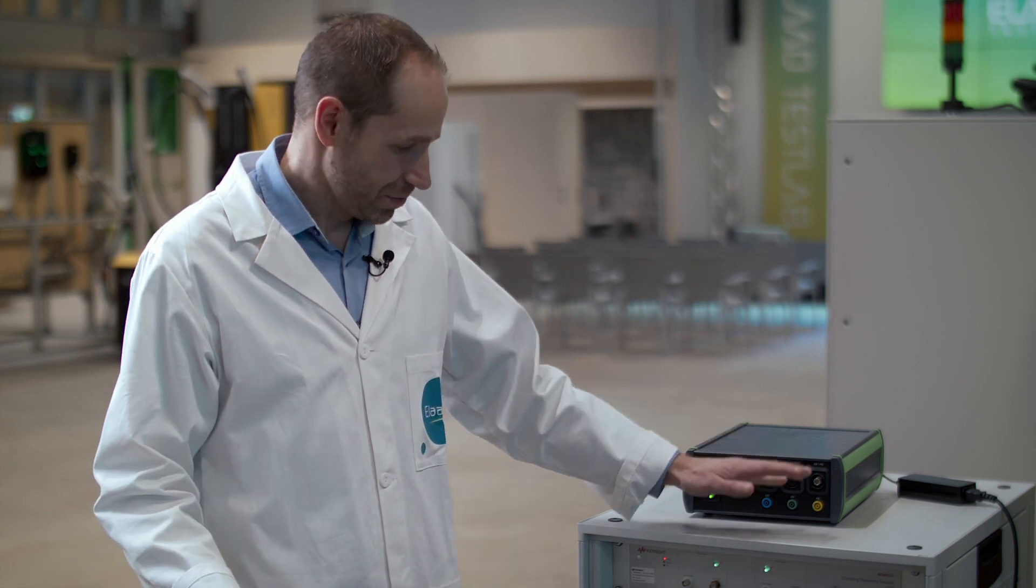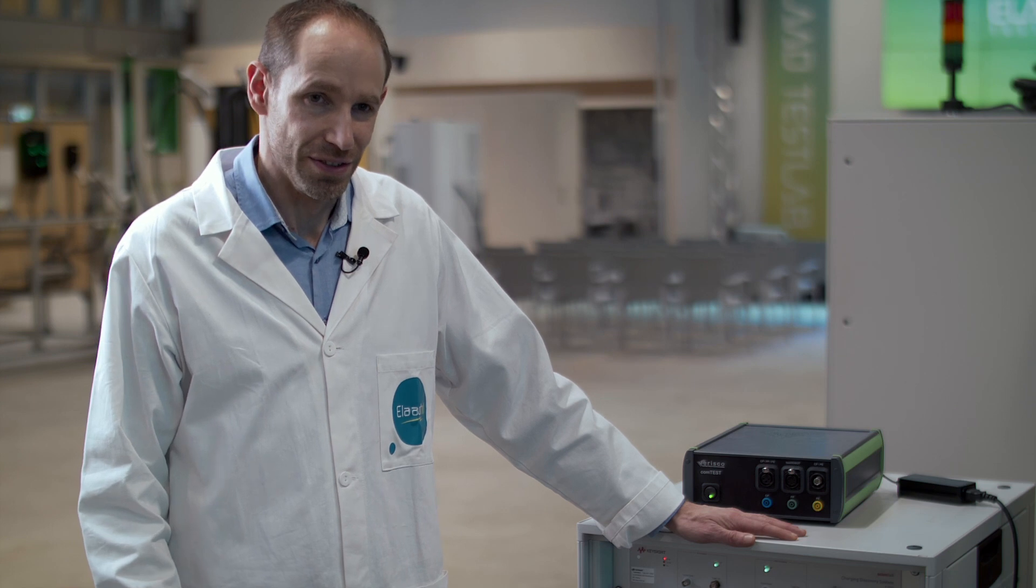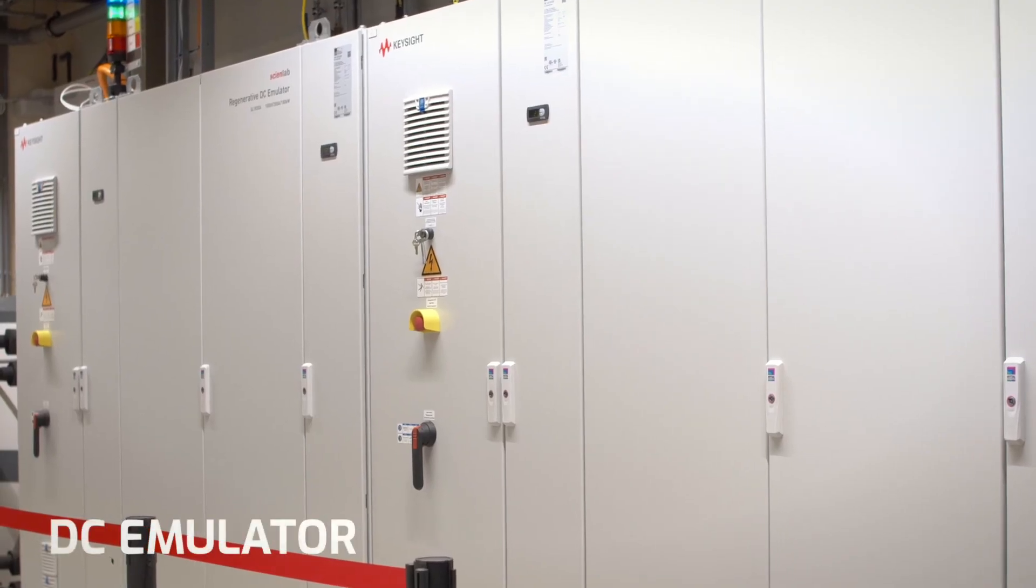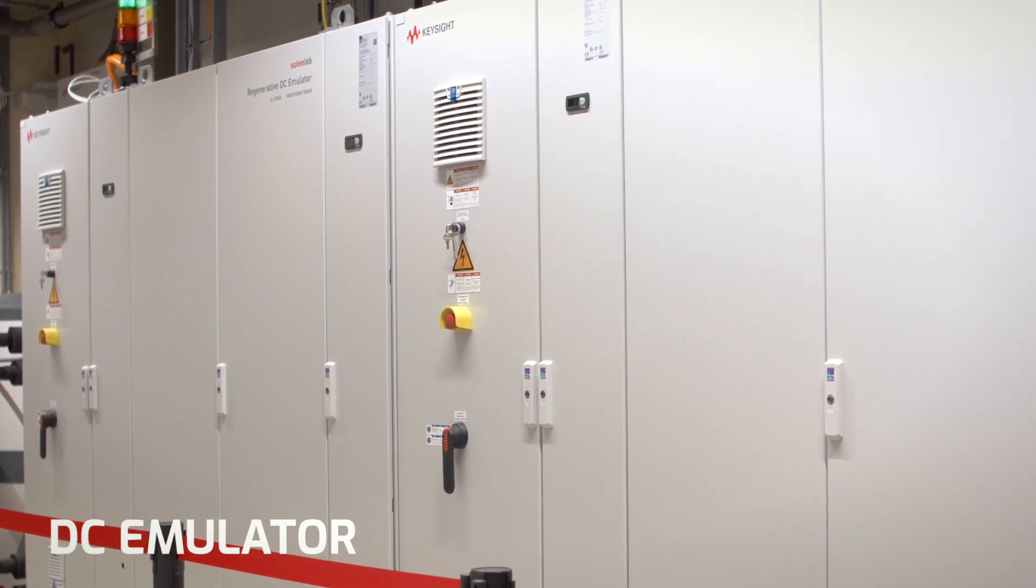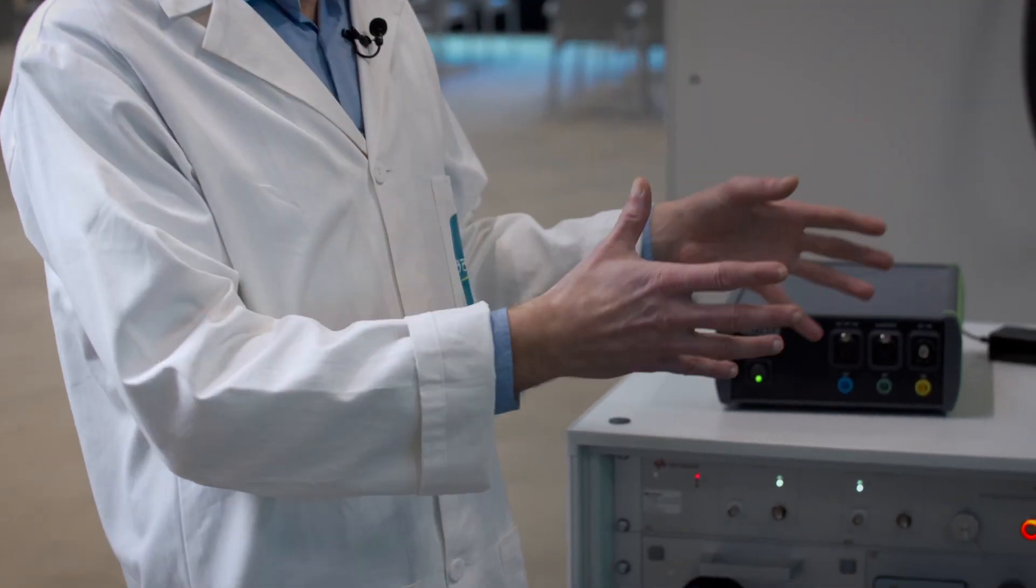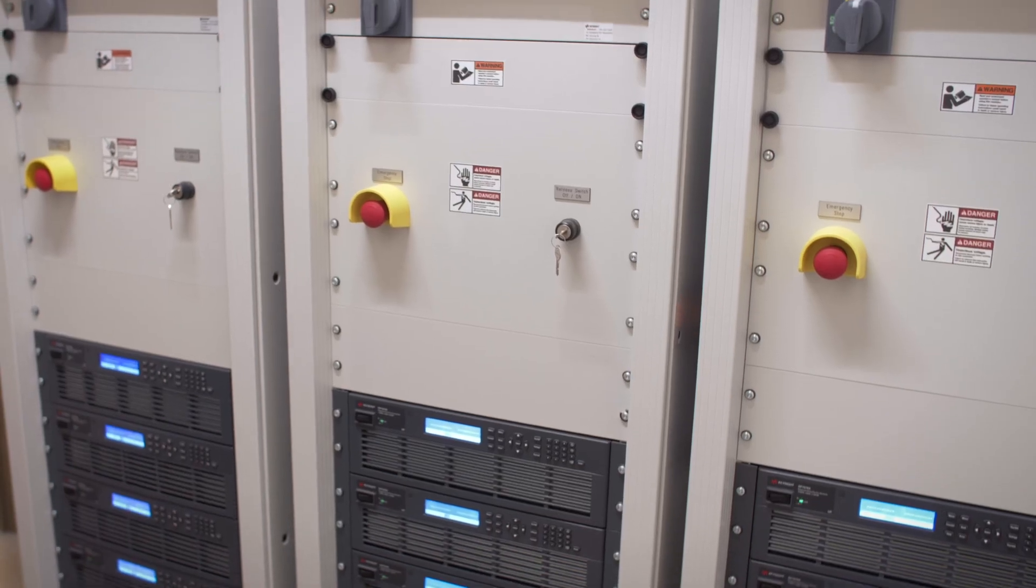So the other thing we can test with the system are the DC chargers. When we do these tests, we take this one again, and we make this pretend to be an electric vehicle that wants to charge on DC. Then we connect this one to the DC supplies we have. And these DC supplies, they emulate the battery of the electric vehicle, and the charging station itself, we connect that to the AC grid emulators we have.